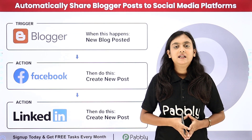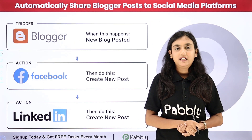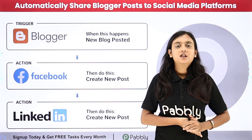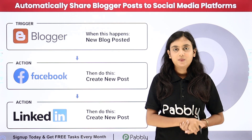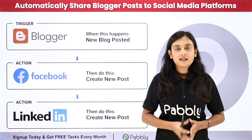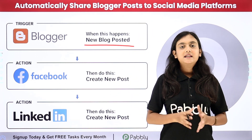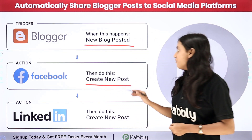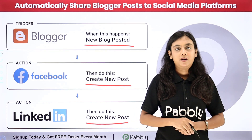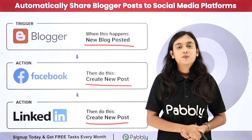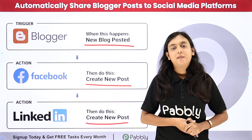But doing this manually is going to take me a lot of time. So what I did was, I simply created an automation using Babbly Connect, which is an amazing automation and integration software that requires no programming and coding skills to create an automation. In this automation, as soon as we post a new blog on our Google Blogger account, automatically that same blog should be created as a post on our Facebook page as well as on my LinkedIn profile.